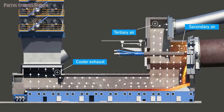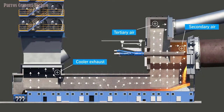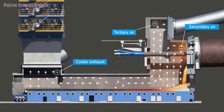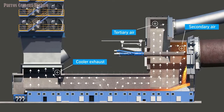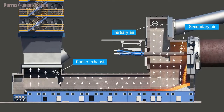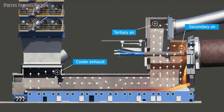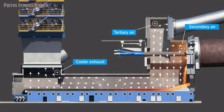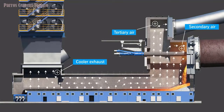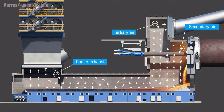The disadvantage is that when the holes in the grate plate get bigger, a lot of clinker dust will fall into the hopper, especially when the kiln operation is dusty or flashing.